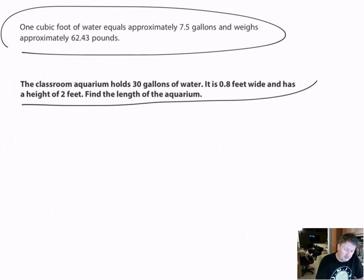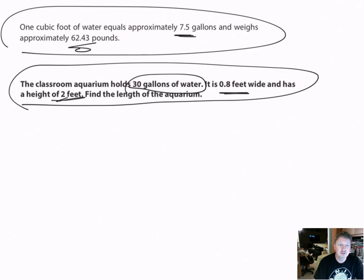The classroom aquarium holds 30 gallons of water, it is 0.8 feet wide and has a height of 2 feet. Find the length of the aquarium. Gallons doesn't help me, I have to find out how many cubic feet. I need the cubic footage of the water, and it tells you one cubic foot equals approximately 7.5 gallons.